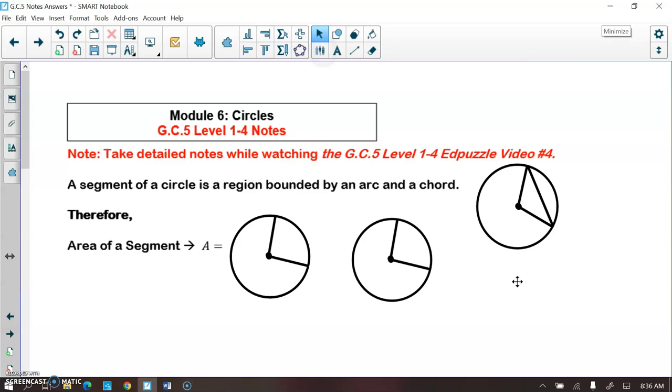So if we have a sector drawn like so and a chord going through that sector, that creates a segment, and the segment is the part that's bounded by the arc and the chord.